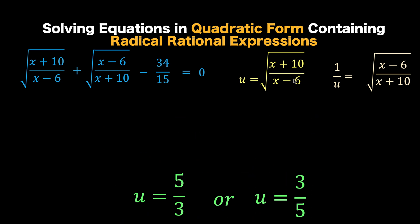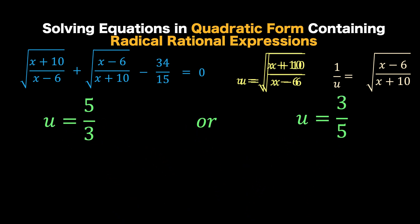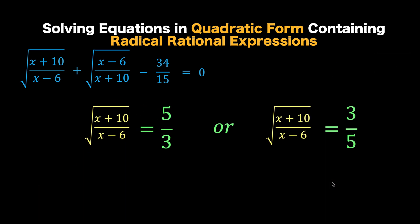Now, since quantities that are equal to the same quantity are also equal, so we now have this 5 over 3 equal to this radical rational expression, the same with this 3 over 5 equal to this expression. Then, let's solve these two equations separately.